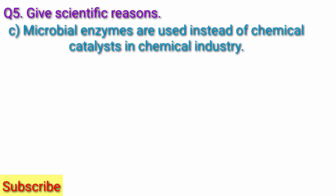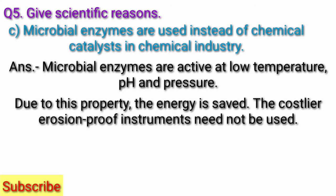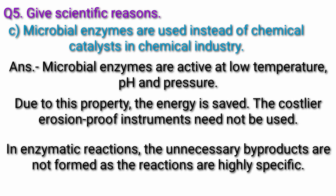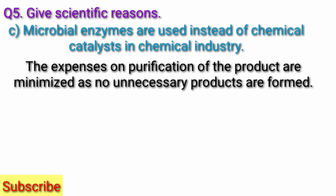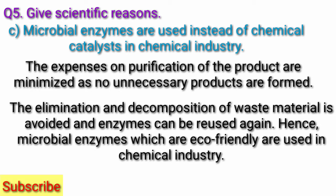Question C. Microbial enzymes are used instead of chemical catalysts in chemical industry. Answer: Microbial enzymes are active at low temperature, pH and pressure. Due to this property, energy is saved and costlier erosion-proof instruments need not be used. In enzymatic reactions, unnecessary by-products are not formed. The reactions are highly specific. The expenses on purification of the product are minimized as no unnecessary products are formed. The elimination and decomposition of waste material is avoided and enzymes can be reused. Hence, microbial enzymes, which are eco-friendly, are used in chemical industry.